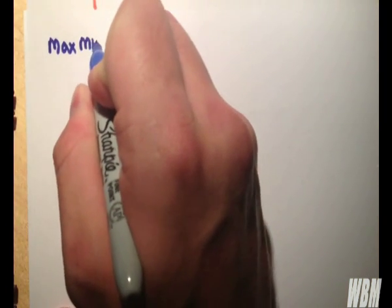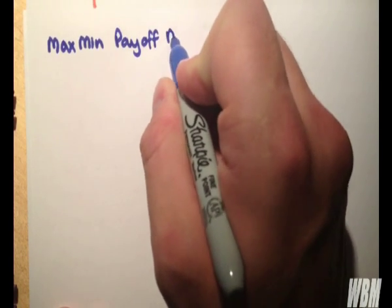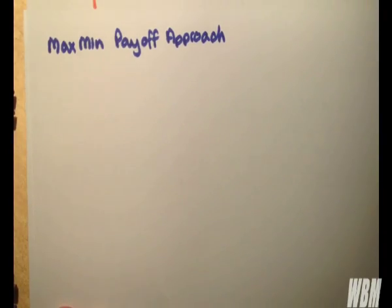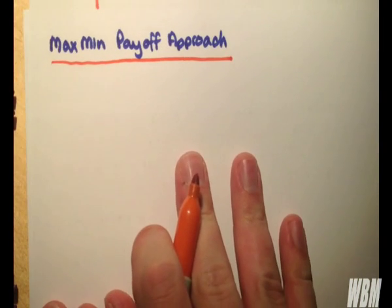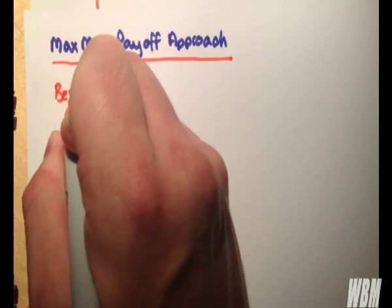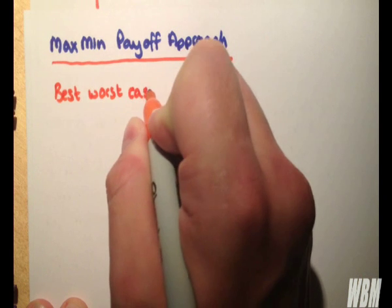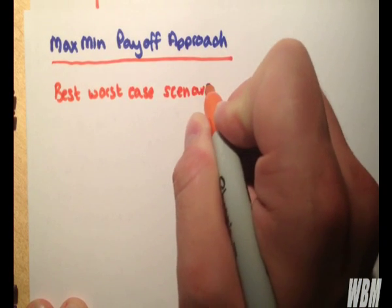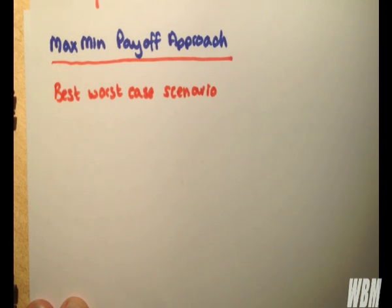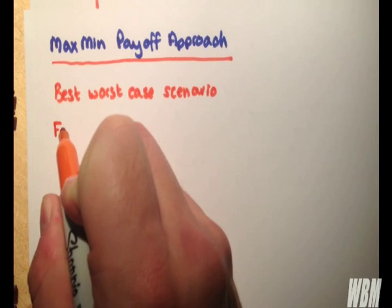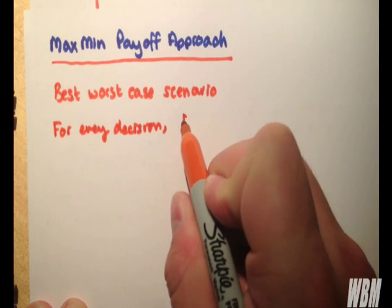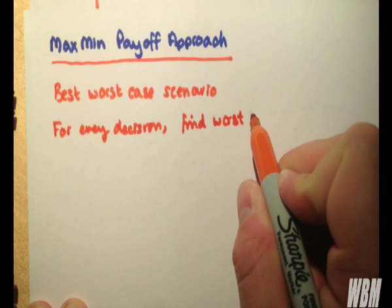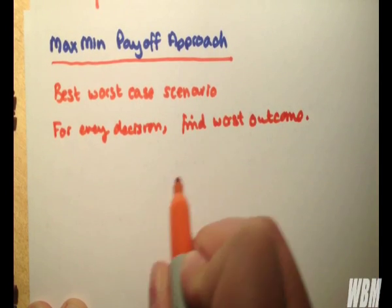How about the max-min payoff approach? Okay, so this is the best-worst-case scenario. So this is quite a bit more sensible than the previous method. So for every decision, we want to find the worst outcome and play it safe. Then we choose the maximum of the minimum.